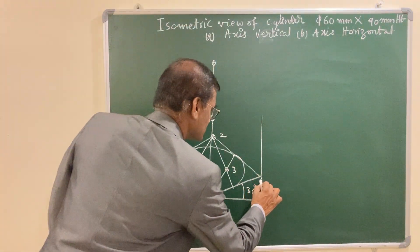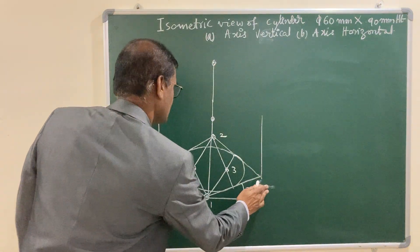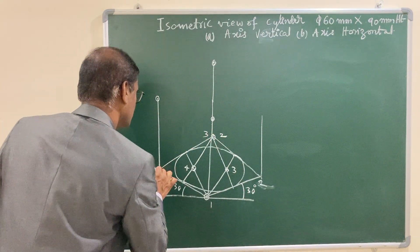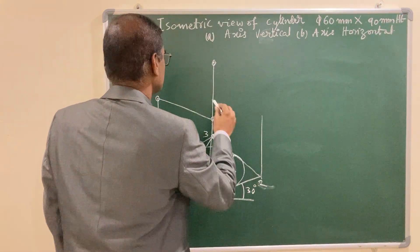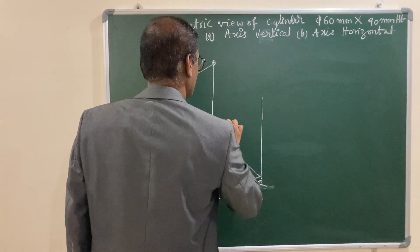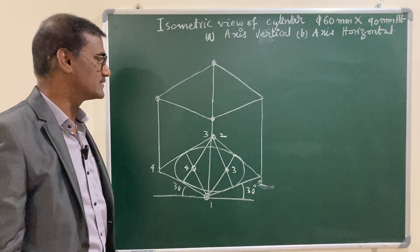You can call this is 1, 2, 3, 4 for the corners, and join all this. You are going to have a parallelogram, that is your top end of the cylinder.